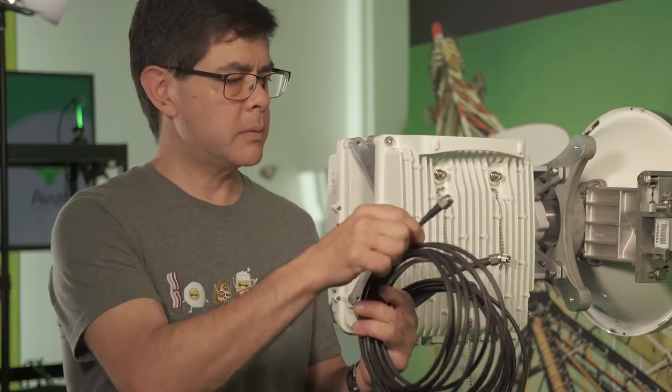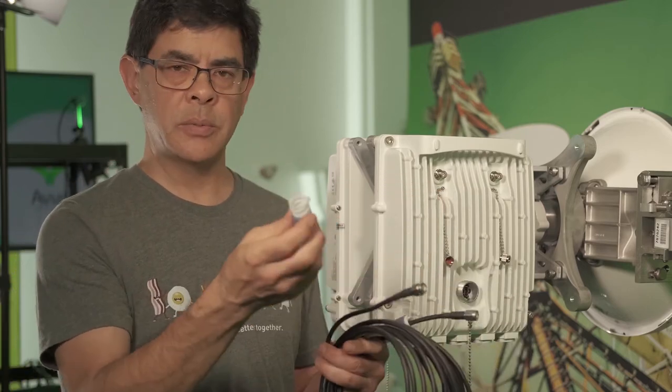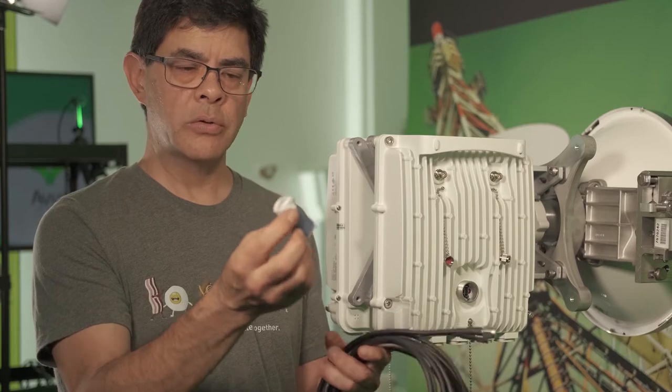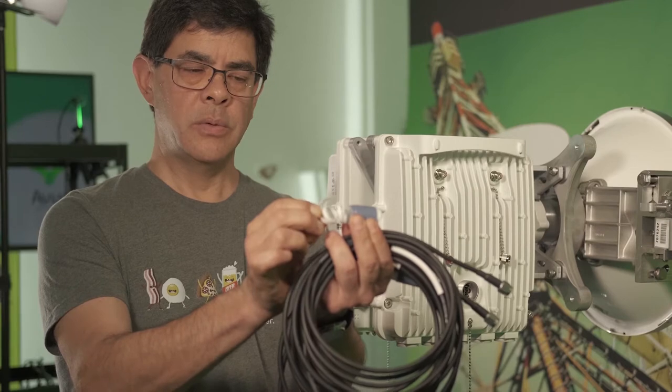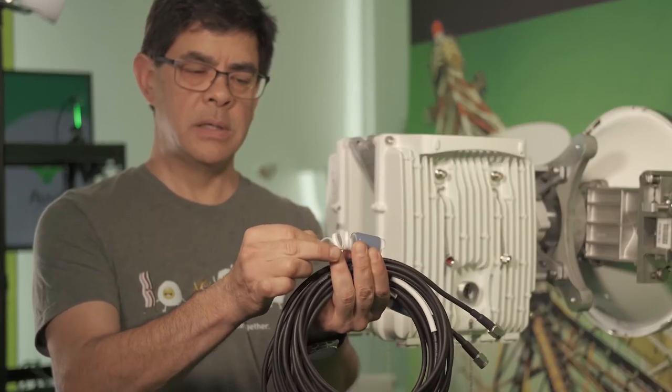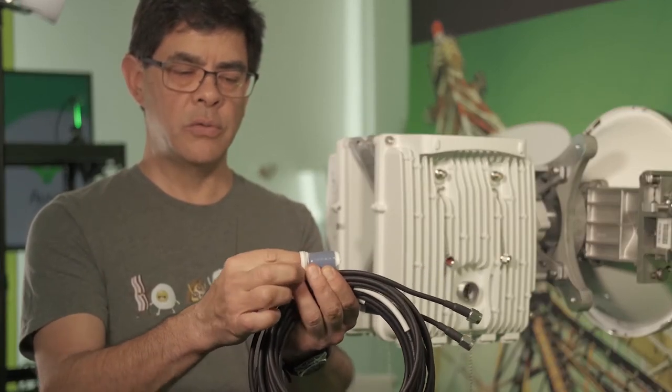Now before we screw the cables onto the radios, we need to put our cold shrink on. The way cold shrink works is if you take this, you'll see there's a little tail that's coming off the end. What you want to do is take that tail and tuck it down inside through the tube.